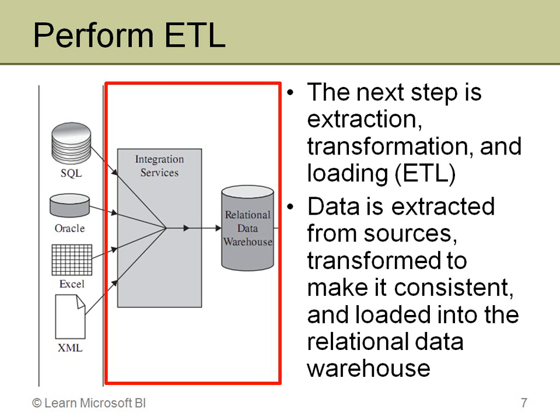In this particular diagram, I show it going straight from the sources through Integration Services into the relational data warehouse. In reality, in a lot of cases there's a staging database in between where you pull from those sources, drop it straight into a relational warehouse, and then perform transformations on it. If you dropped it into SQL Server staging tables, you can just perform some T-SQL against it, which makes it easier sometimes to manipulate. So don't think that just because you see the diagram this way you can't have a staging area — you certainly can. This is just a simplified view of that.